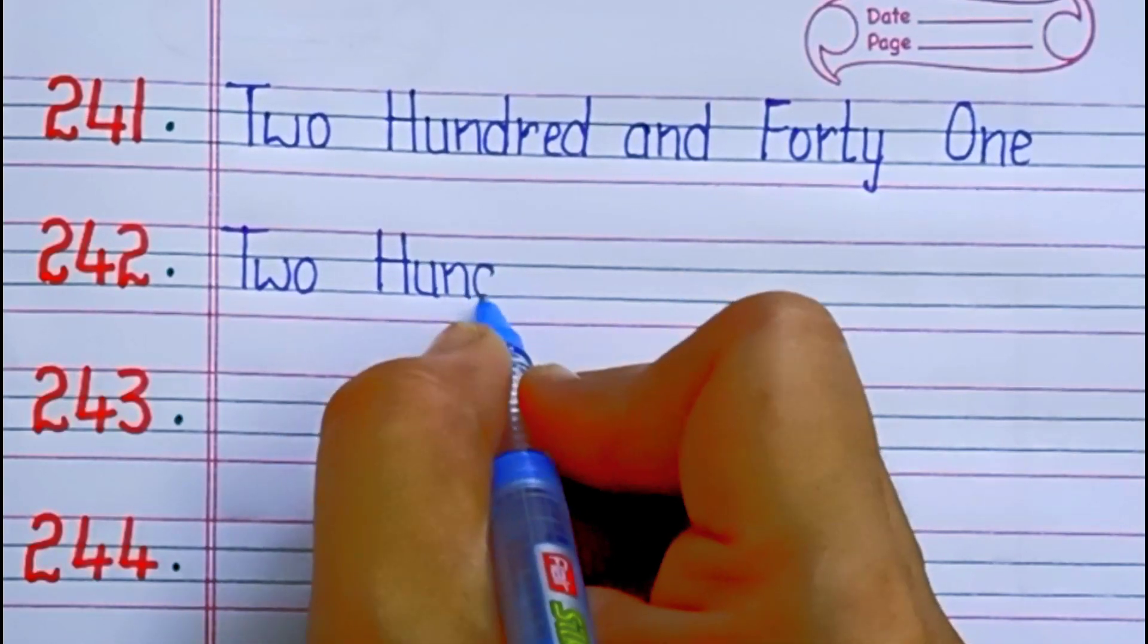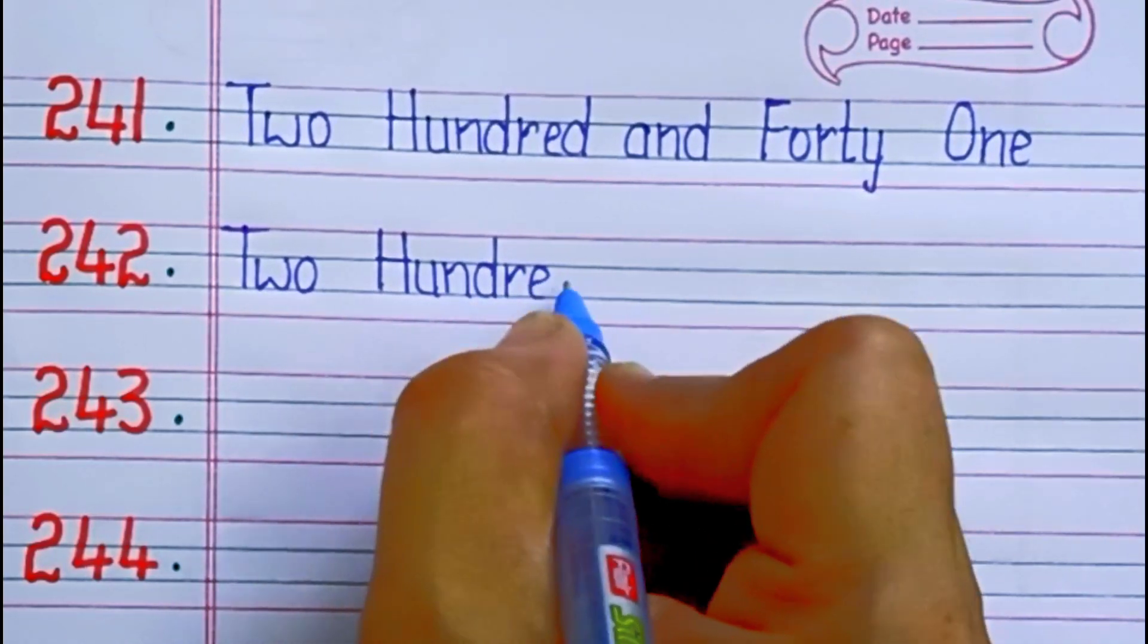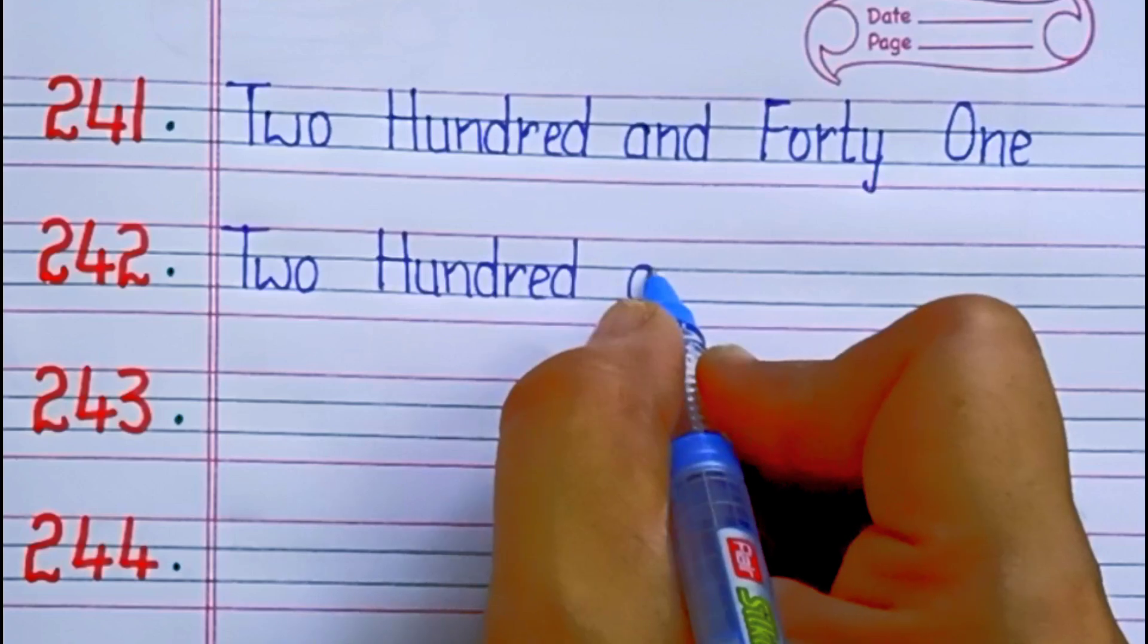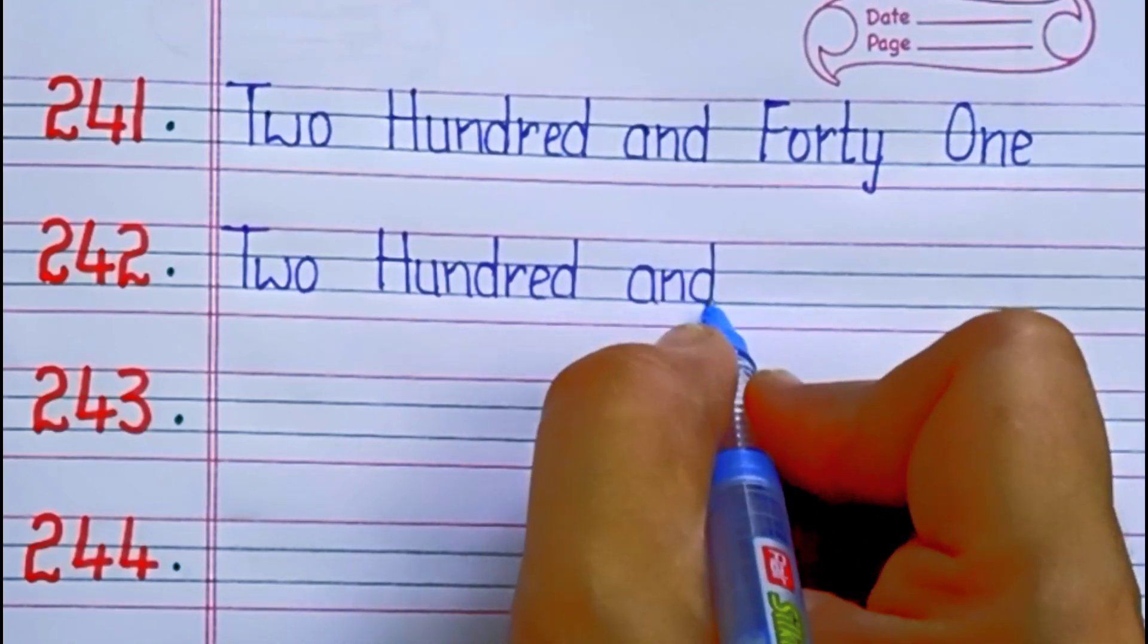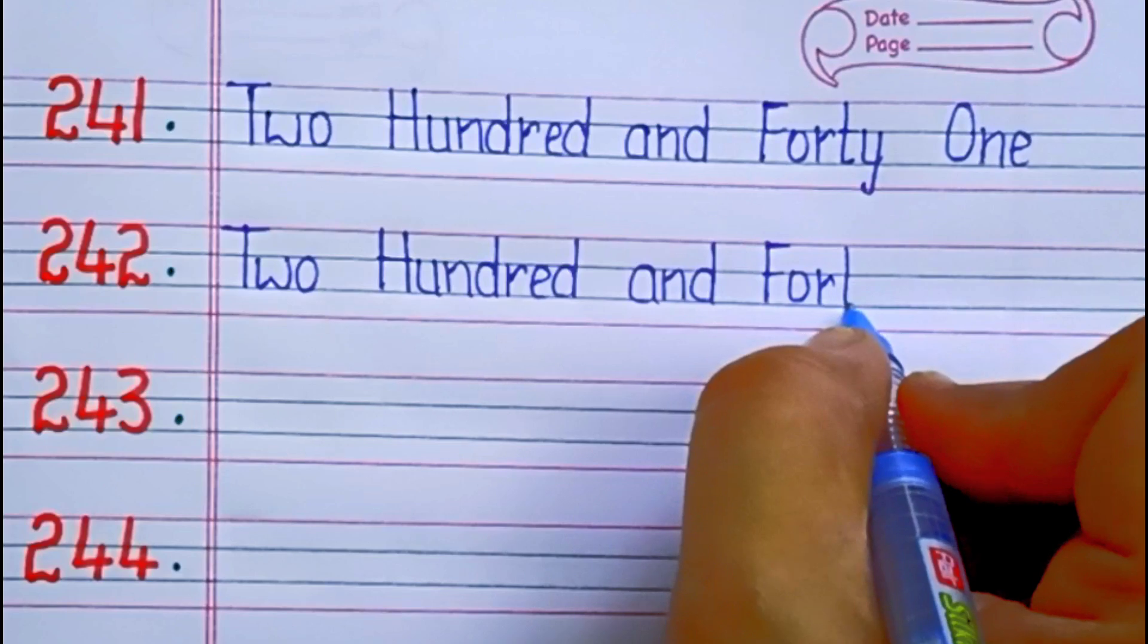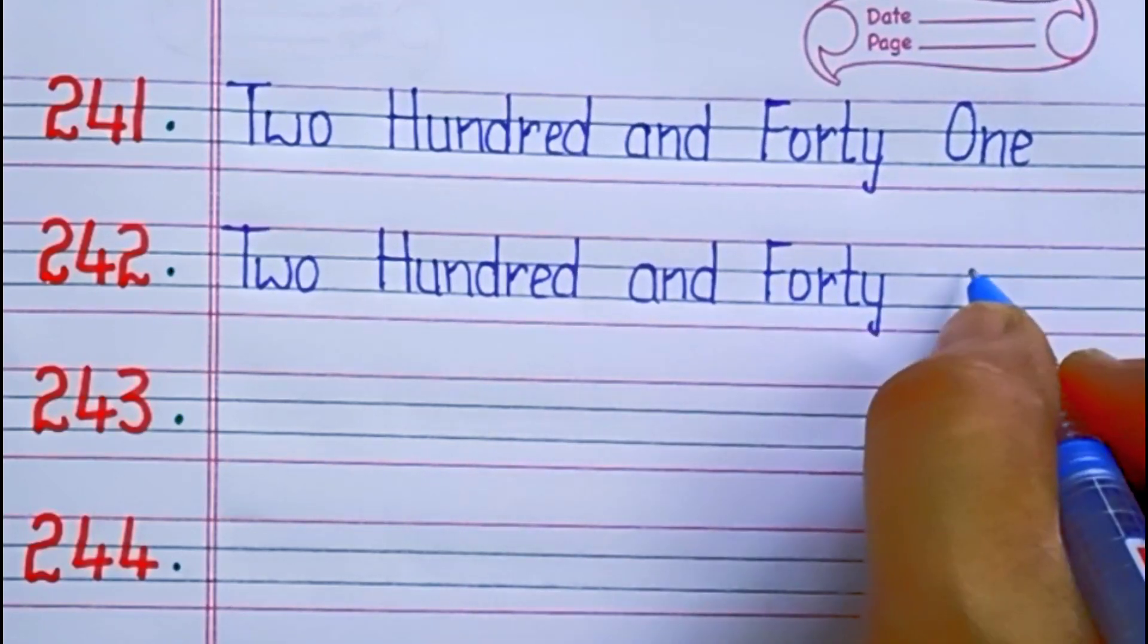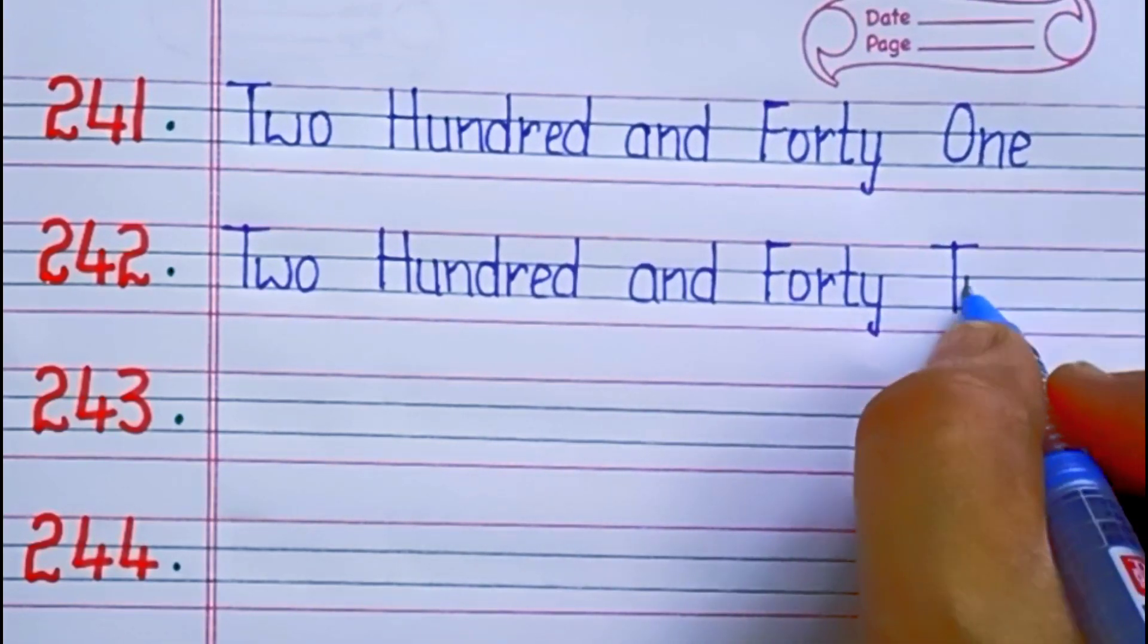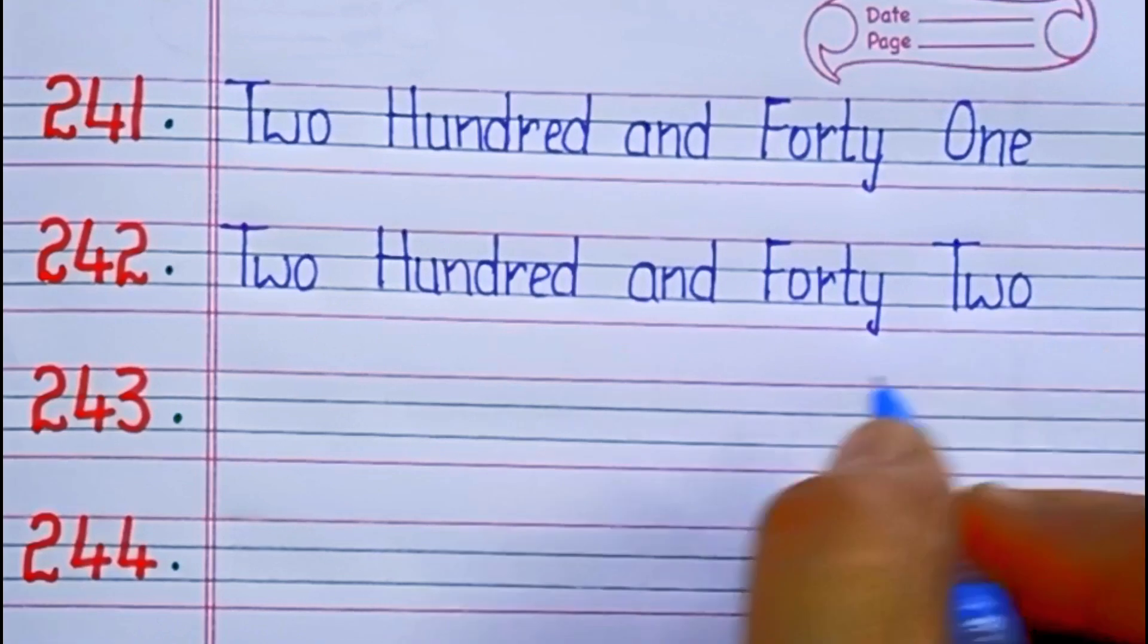242. Two hundred forty-two: F-O-R-T-Y, 40. T-W-O, 2. Forty-two.